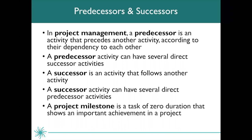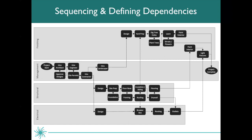A project milestone is a task of zero duration that shows an important achievement in a project. I always like to put project milestones in for my project start date, my project end date, and any major decisions that need to be made along the way. This is what it looks like when you are sequencing and defining dependencies — you can build this out in something like Visio. The level two work breakdown structure, the main buckets of work, are down the left-hand side: finishing, management, structural, electrical, and it shows what order the work needs to be accomplished in. Here's the project start milestone, then hire an architect, then approve designs as another milestone, then hire the engineer.